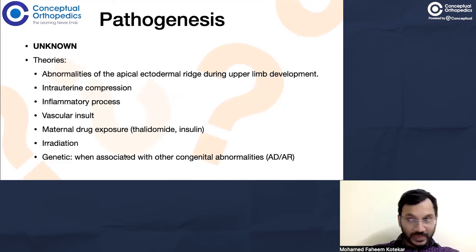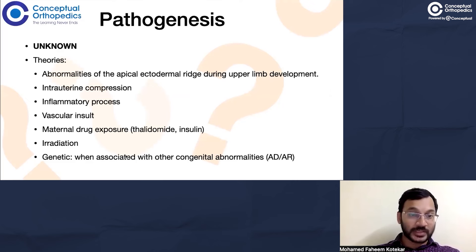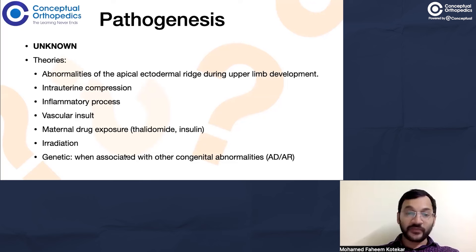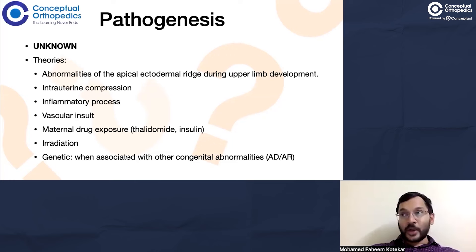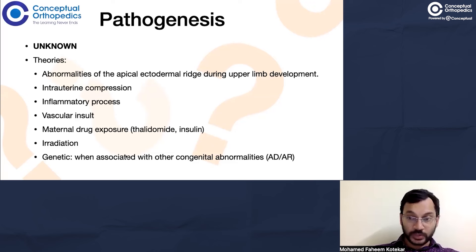What causes it we really don't know — we can't pinpoint one particular thing — but there are theories regarding abnormalities of the apical ectodermal ridge, which is involved in upper limb development, intrauterine compression, inflammatory processes, vascular insult, maternal drug exposure especially thalidomide and insulin, irradiation, and genetic factors. Genetic causes are especially important when associated with other congenital abnormalities. A bulk of the work for radial club hand and thumb hypoplasia was done by Bachiamco during the 1960s–1970s thalidomide epidemic, when many children with limb deficiencies were born due to thalidomide use in pregnancy.